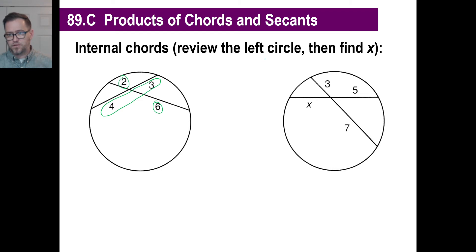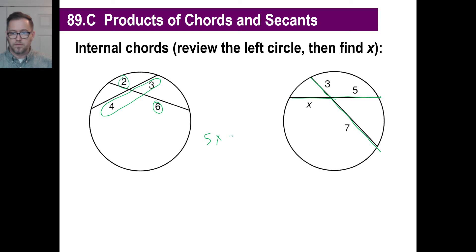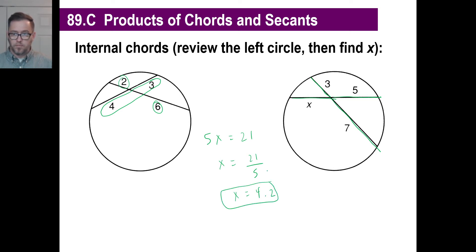You can use that information to find the value of things like x. Let's say this is 3 inches, this is 7 inches, and this is 5 inches — what's the value of x? Set up an equation: 5 times x equals 7 times 3, or 21. Just divide by 5, and that's 21 over 5, which is 4.2. That is absolutely what you would get if you measured it out perfectly.